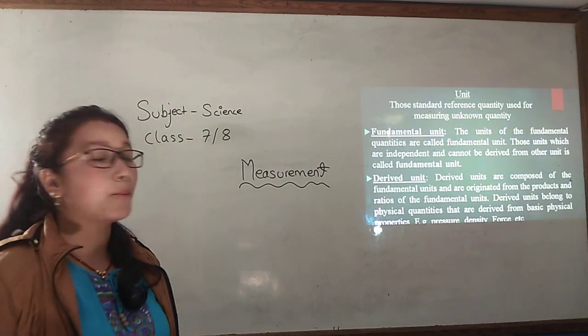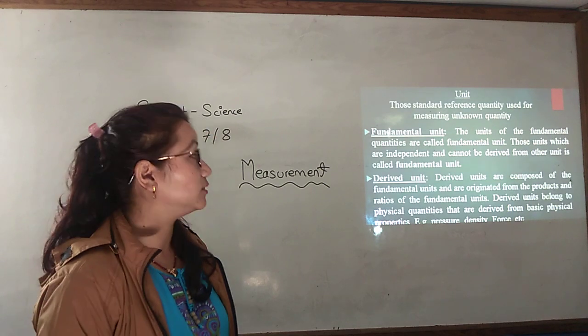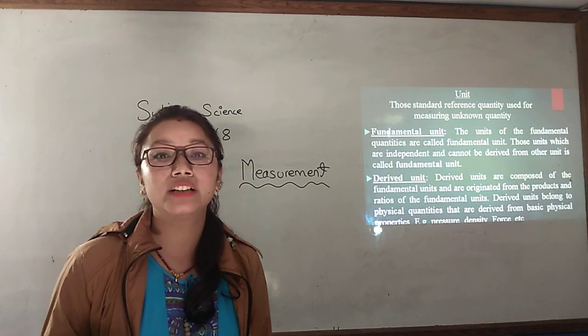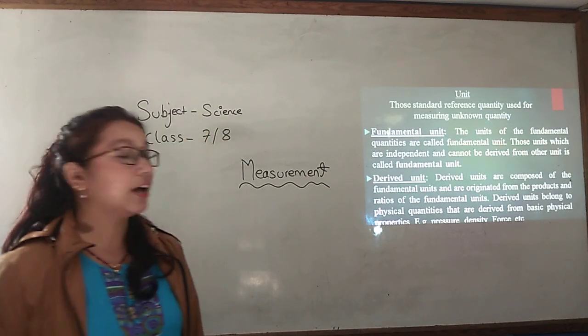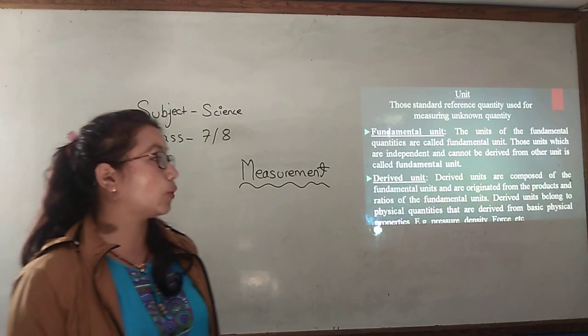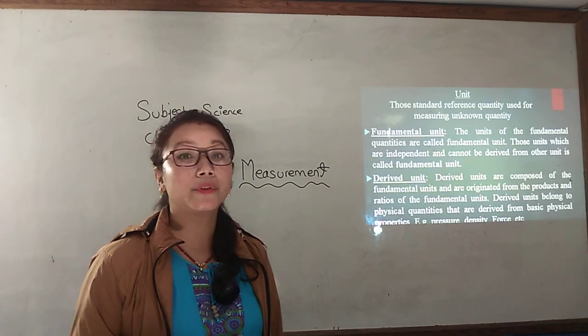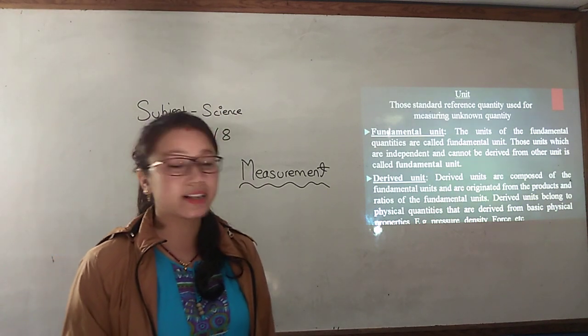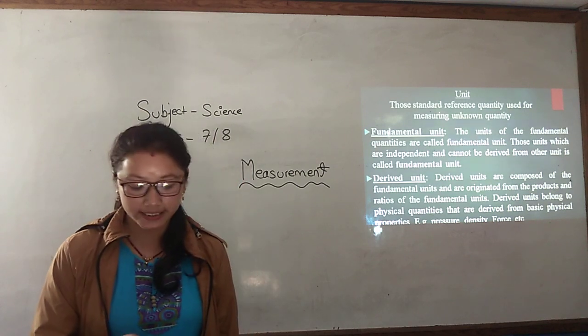And under the derived units, that is composed of the fundamental units and are originated from the products and the ratio of that fundamental units. Derived units belongs to the physical quantities that are derived from the basic physical properties. For example pressure, density, force, etc.